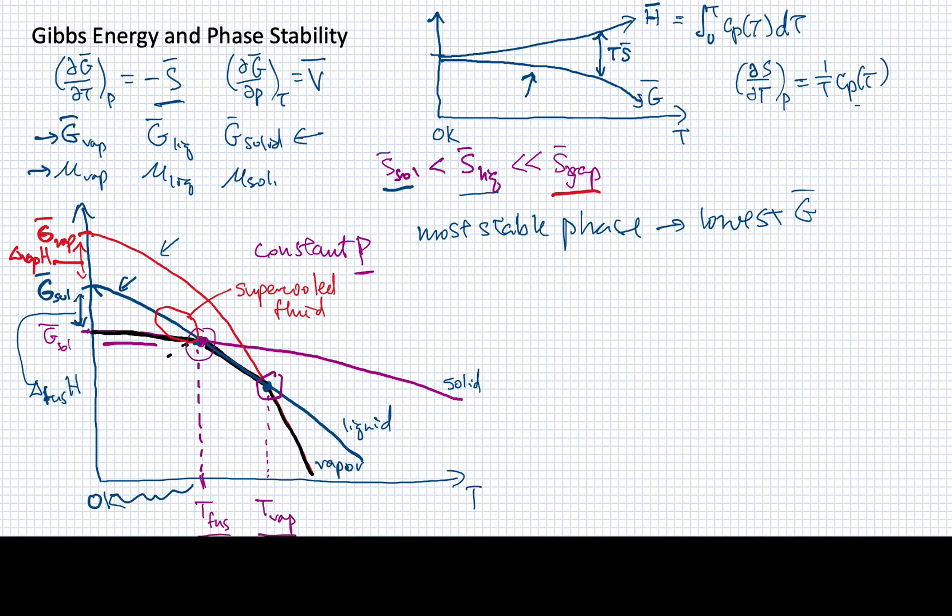Now, one of the things that we can note from this is that the Gibbs molar energy is continuous throughout. In other words, we never have a break where we can't actually assign a value to the Gibbs molar energy. So it's a continuous function of temperature. But its derivative is not continuous.